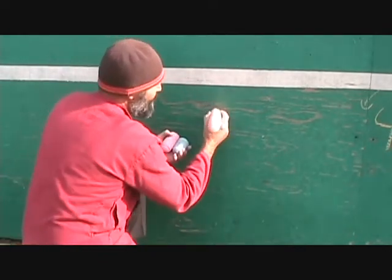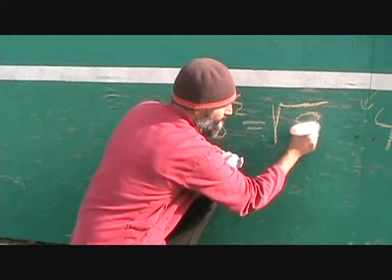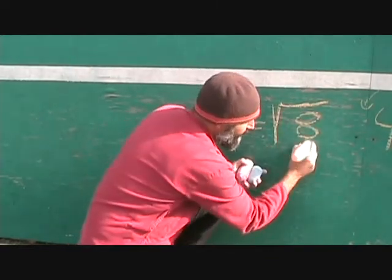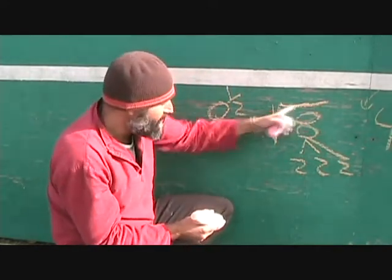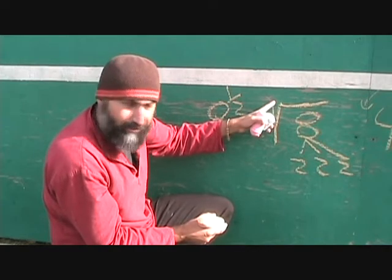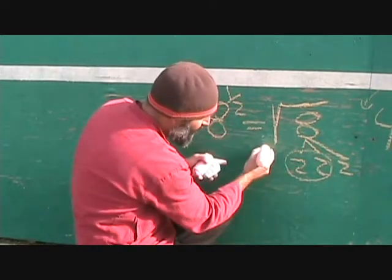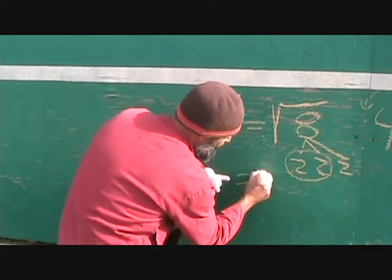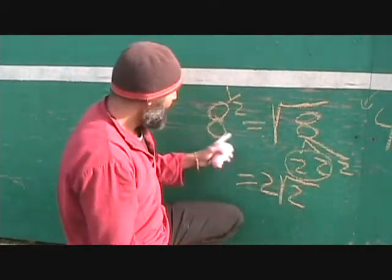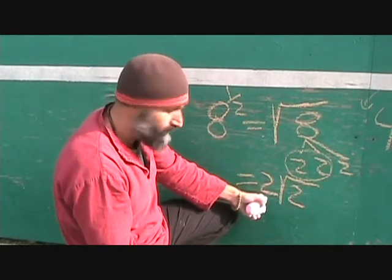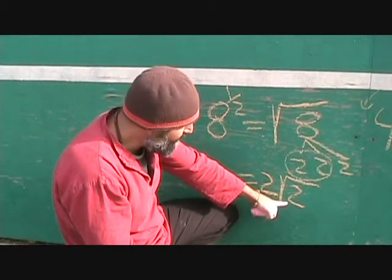Let's do another square root: 8 to the power of a half is the square root of 8. Eight breaks down to 2 times 2 times 2. Since this is a square root, you're looking for pairs. Two twos can come out of the symbol and they become a single 2. What's left inside the root symbol is still one 2, so you write it down there. So 8 to the power of a half is 2 root 2. That is an irrational number because it's the root of a prime — it doesn't end or repeat.